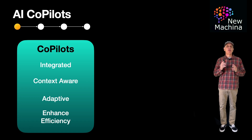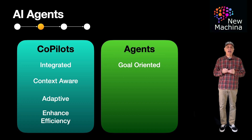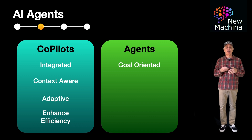Now let's define what we mean by the term AI agent. AI agents are goal-oriented. They are designed to achieve specific objectives or tasks, which can range from simple automated responses to complex problem-solving activities in various domains.